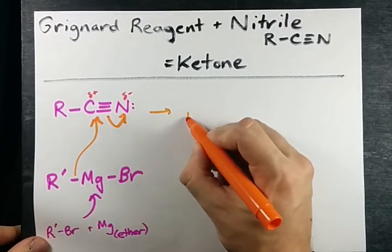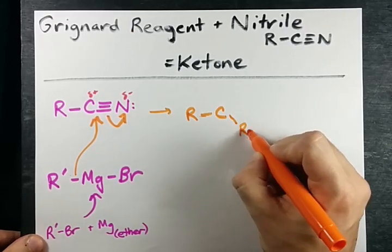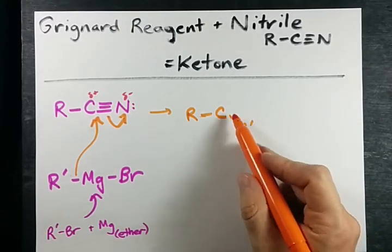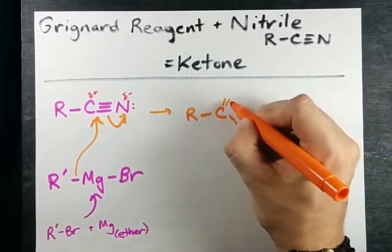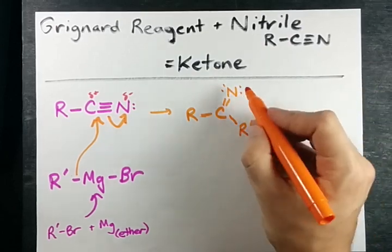What we end up with is an R group on the carbon. We are also having the R prime group attached to that carbon and the nitrogen has been reduced to a double bond. It has two lone pairs.